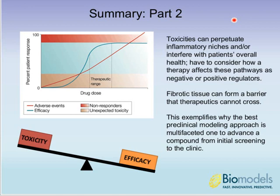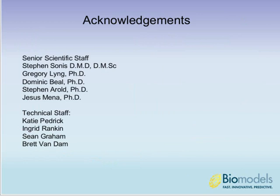To summarize: toxicities can perpetuate inflammatory niches and interfere with overall patient health. You must consider how your therapy affects the supportive care aspects of treatment and whether it acts as a positive or negative regulator of disease-driving pathways. Fibrotic tissue can form a barrier that therapeutics cannot cross — exemplifying why the best approach to preclinical modeling is multifaceted, pairing models to the stage of drug development from initial screening all the way through to the clinic. We'd like to acknowledge our senior scientific staff and the technical staff in the oncology program.